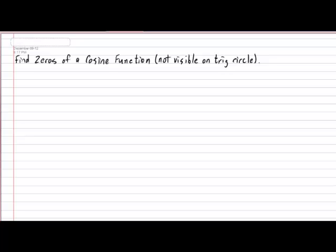Hi everyone. In today's lesson we'll be taking a look at how to determine the zeros of a cosine function when the trig circle cannot help us locate our possible angles. So in your notebook, please put down today's subtitle: find the zeros of a cosine function, brackets not visible on the trig circle. Determining the zeros of a cosine function when a trig circle cannot assist us is not terribly difficult and simply depends on your algebra skills and an appropriate use of your calculator.